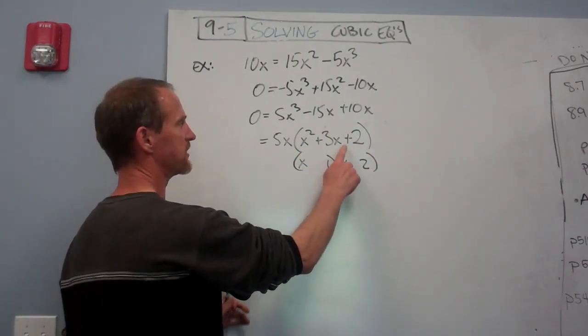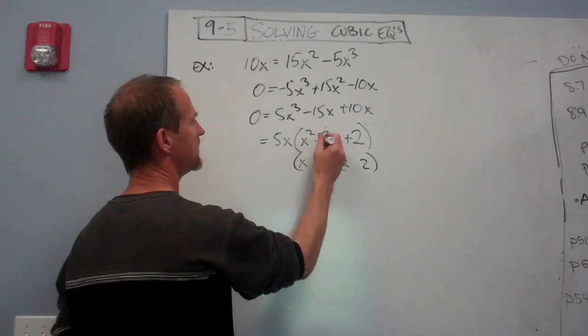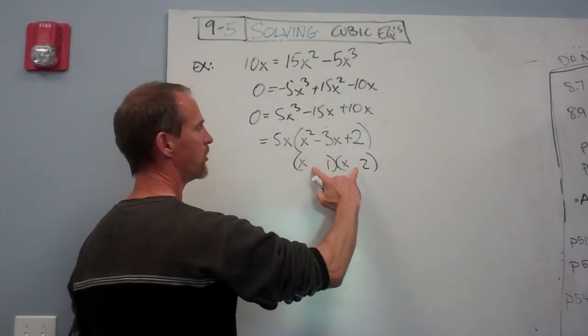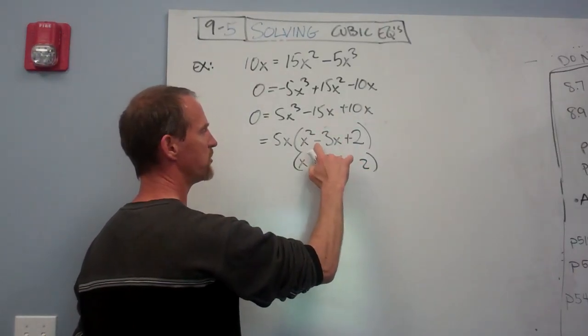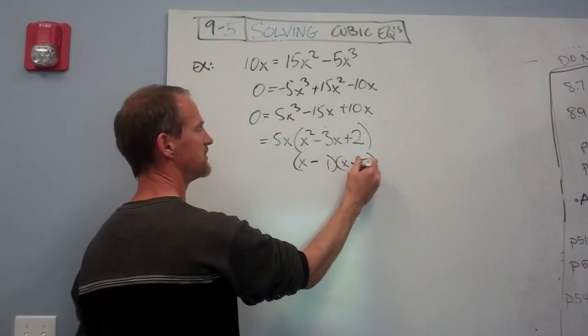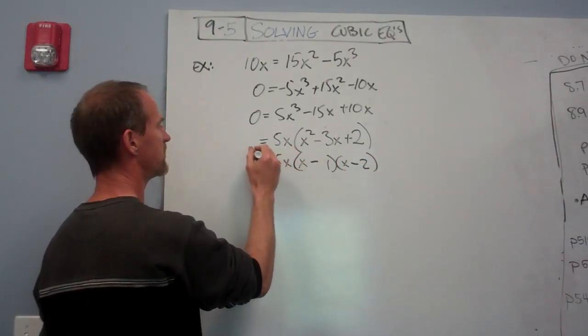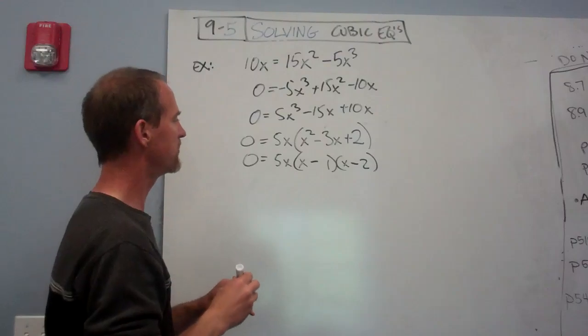When I go to factor, if the sign is a positive here, both of these signs will be the same, and they'll be whatever that sign is. So it's a minus and a minus. That 5x does not disappear, nor does the 0. And now you ask yourself, when is 5x going to be equal to 0?